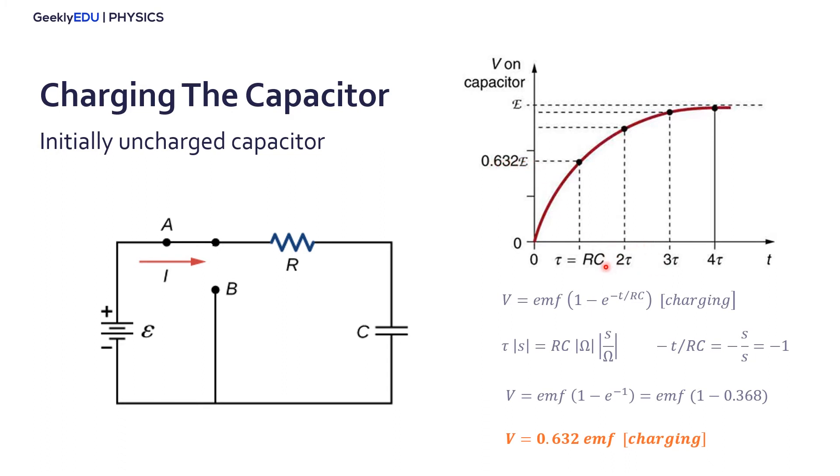At two time constants, we will charge 0.632 times the remaining charge in the capacitor. And it goes until it's fully charged.